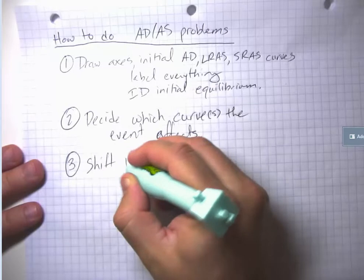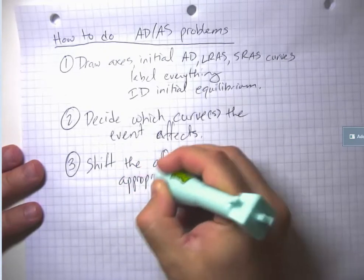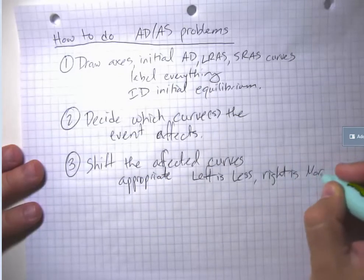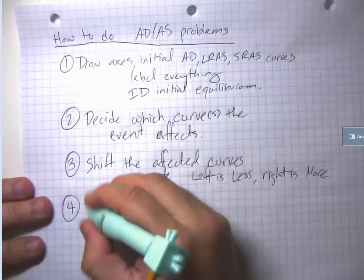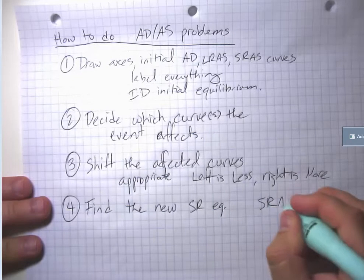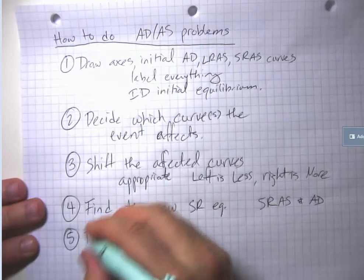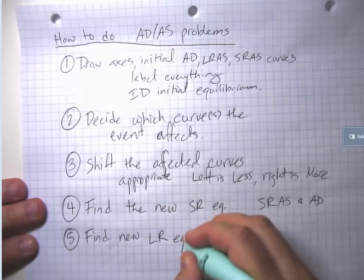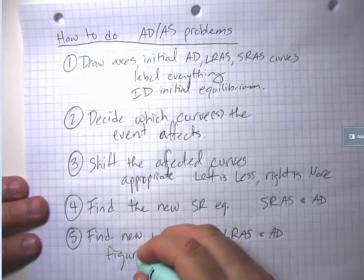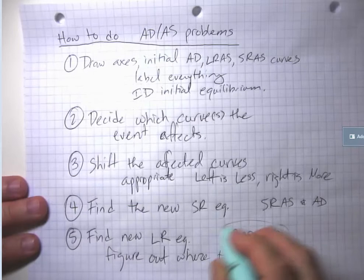Shift the affected curves appropriately, where you want to remember left is less, right is more. Four: find the new short-run equilibrium at the intersection of short-run aggregate supply and aggregate demand. And then finally five: find the new long-run equilibrium at the intersection of long-run aggregate supply and aggregate demand, and figure out where to draw short-run aggregate supply so that it also passes through that intersection.